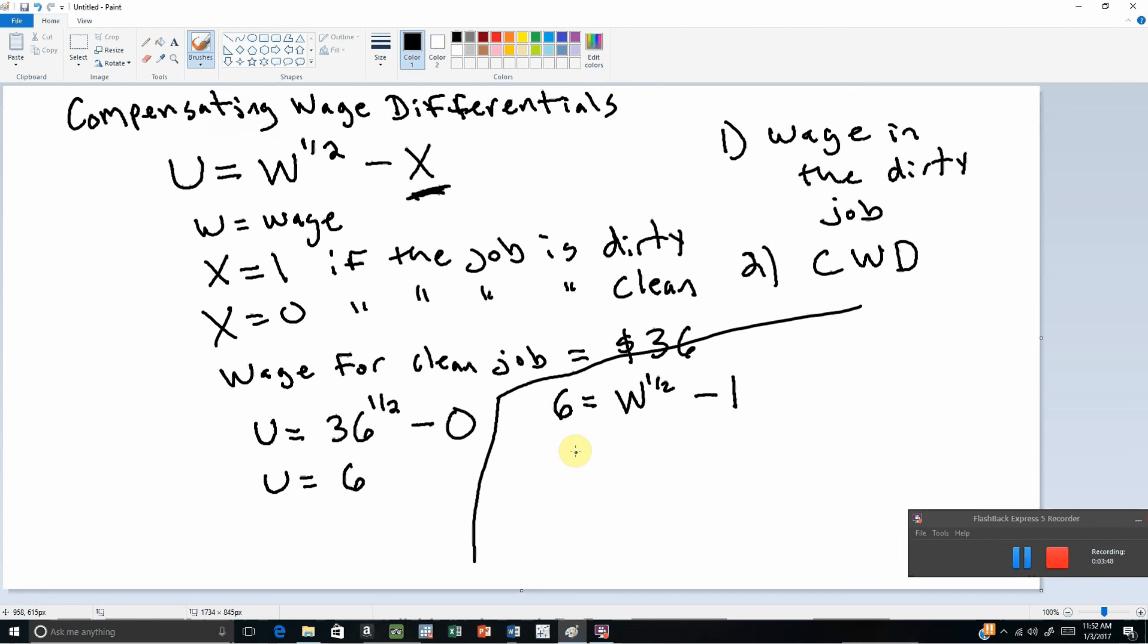So solving for this, adding one to both sides and then squaring both sides, we get the wage in the dirty job to equal $49.